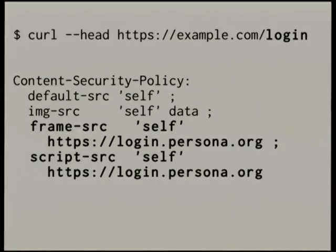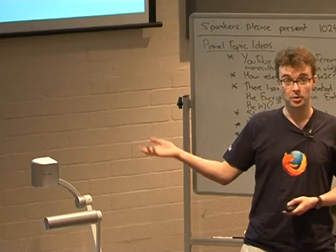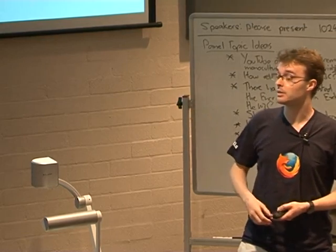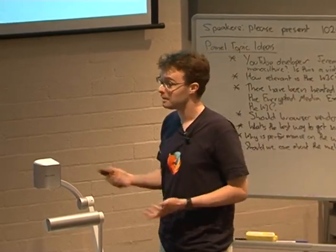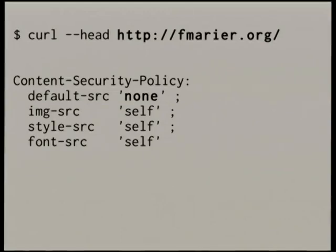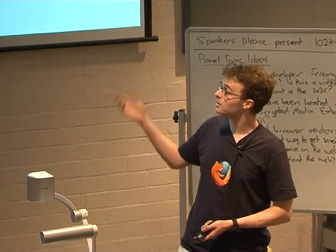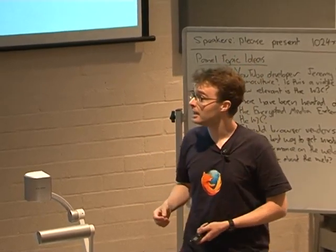Here's another example — the same hypothetical site but now looking at a login page over HTTPS. This example happens to use Persona for logins, and Persona requires two extra things: it requires you to open a hidden iframe to login.persona.org, and to load a script from the same URL. So we allow these things by overriding the default policy. Another example — this is my homepage, a real example. Here I've got default-src 'none', which means by default there's no external content loaded at all. I have images and a stylesheet, so I relax those restrictions somewhat, and also an edit-font.